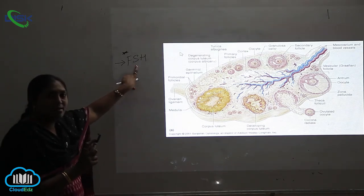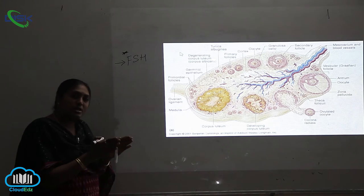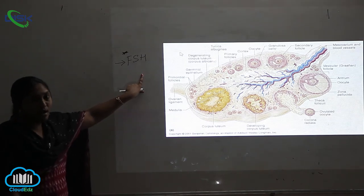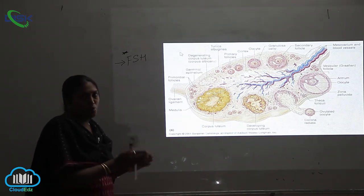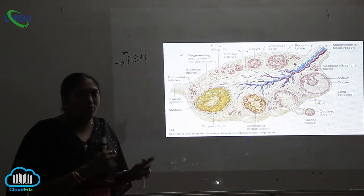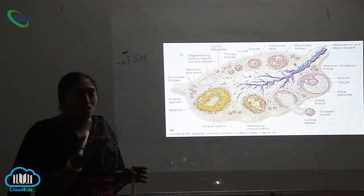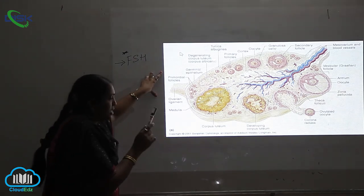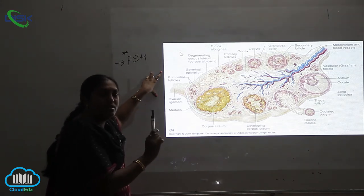The contraction and relaxation of the fallopian tubule depends upon the release of follicle stimulating hormone. Now let us look at a clear picture — the transverse section (TS) of the ovary.